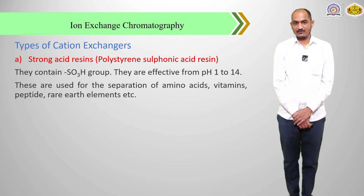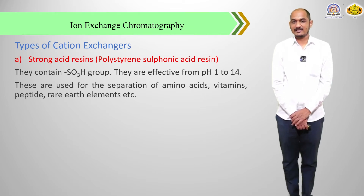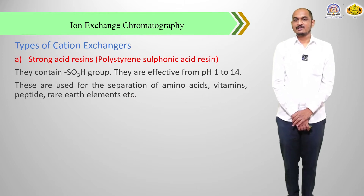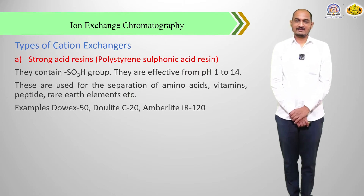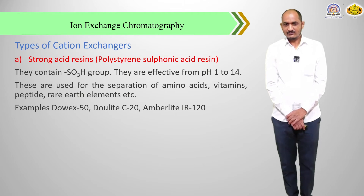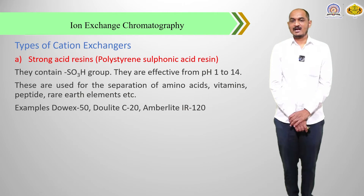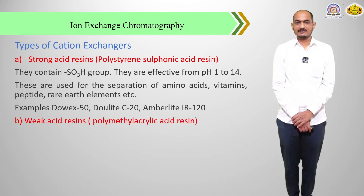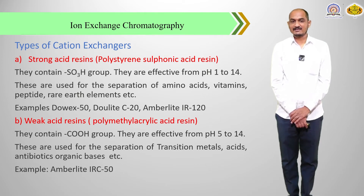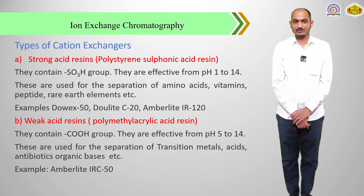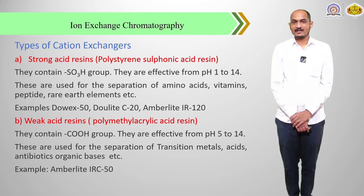There are two types of cation exchangers. The first type is the strong acid resin — example: polystyrene sulfonic acid resin. They contain the SO₃H sulfonic acid group. They are effective from pH 1 to 14, and are used for the separation of amino acids, vitamins, peptides, and rare earth elements. Examples include Dowex 50, Duolite C20, and Amberlite IR 120. The second type is the weak acid resin — example: polymethylacrylic acid resin — containing the COOH group. They are effective from pH 5 to 14, and are used for the separation of transition metals, acids, antibiotics, and organic bases. An example is Amberlite IRC 15.